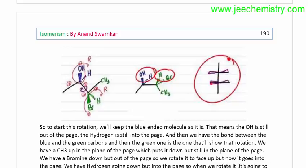This is a wedge formula. A horizontal line is a wedge and a vertical line is a dash. I need to identify the dash in this particular structure.